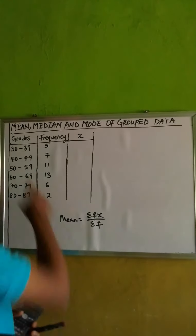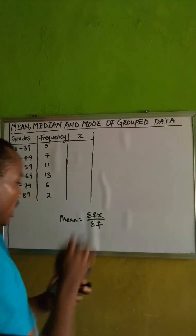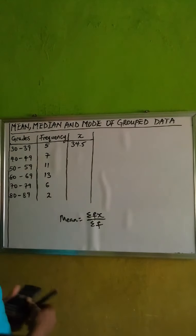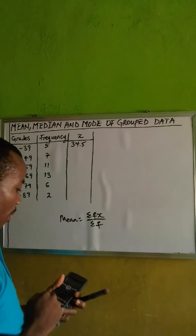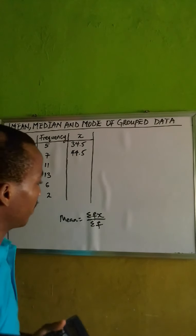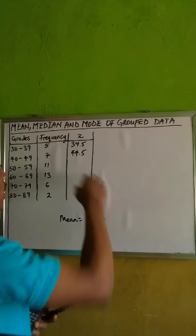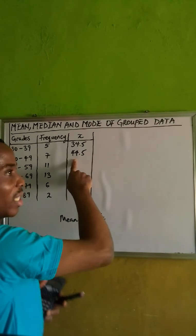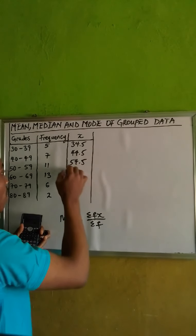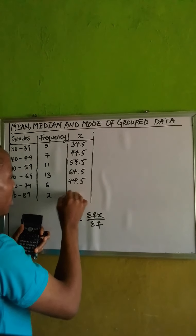Let's get the values of x. 30 plus 39 is 69 divided by 2, which gives us 34.5. For the next one: 40 plus 49 is 89 divided by 2, giving us 44.5. At this junction we've found the pattern — instead of adding and dividing by 2 each time, we can observe the class intervals are increasing by 10. So the following values are each plus 10: 54.5, 64.5, 74.5, and 84.5. We've gotten all the x values.